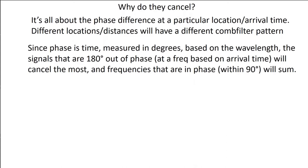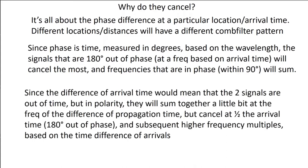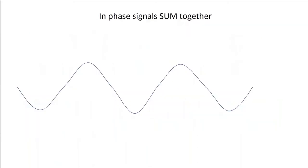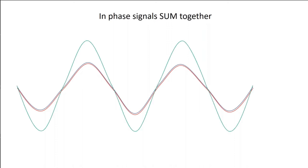In-phase signals will sum together. Here we have a sine wave — add another sine wave, offset it slightly so we can see it, and when you put the two together you have twice the amplitude. Out-of-phase signals will cancel. Here we have the first arrival, and then the second arrival coming in. That second arrival is in polarity, but it's offset by half a wavelength — it starts a little bit later in time, so it's in polarity but out of time. That's a very important distinction. When you have those two together, you end up with complete cancellation at that particular frequency.